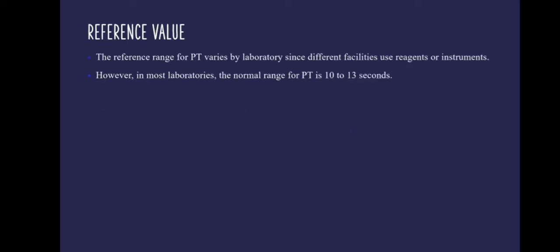The reference value for Prothrombin Time varies between laboratories since different facilities use different reagents and different instruments. However, in most labs the normal range is 10–13 seconds.